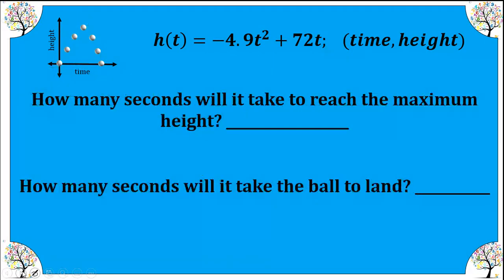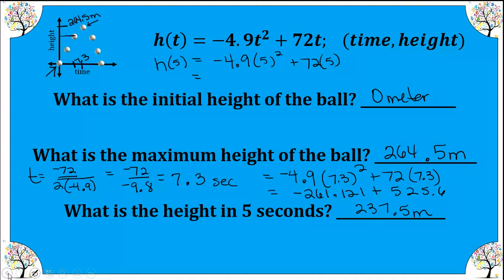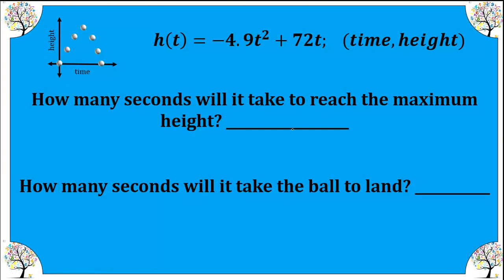How many seconds will it take to reach the maximum height? We already calculated that — about 7.3 seconds. How many seconds will it take the ball to land? We're looking for the second root. We know one root is zero, and now we use the quadratic formula to find the other root, setting our equation equal to zero.